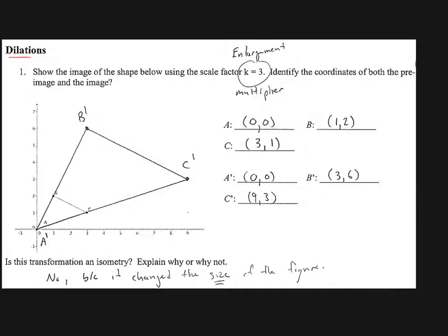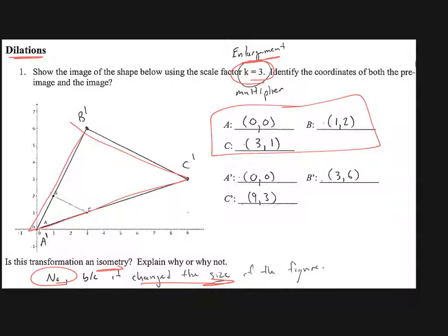On our dilation question, the big factor here is the K factor. Notice I said this is an enlargement. So I took all of my original points of A, B, and C. I listed them here. Then what? I multiplied everybody there by three. Zero, zero times three is still zero, zero. Three, one becomes nine, three. And one, two becomes three, six. I plotted those. I used a nice straight edge to draw my lines. Relabeled everybody. And is this an isometry? No, why not? Because we changed the size. So no, because there's a change in size.